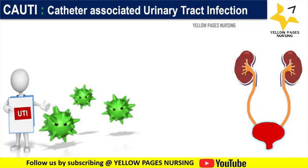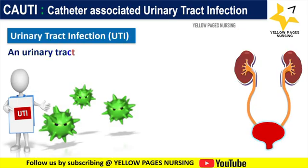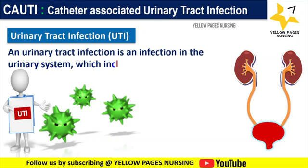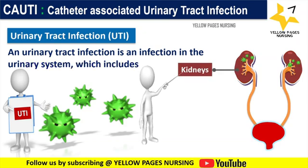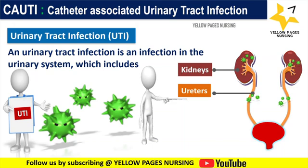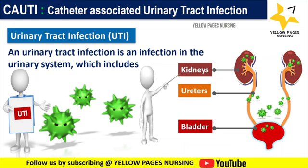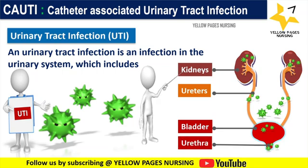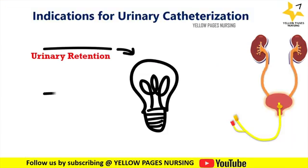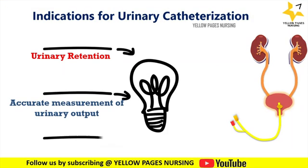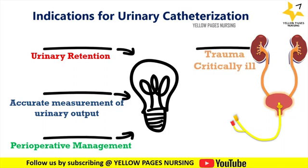What is a UTI? A urinary tract infection is an infection in the urinary system, which includes the kidneys which filter the blood to make urine, the ureters which pass urine from the kidneys to the bladder, the bladder which stores the urine, and the urethra where urine exits the body.